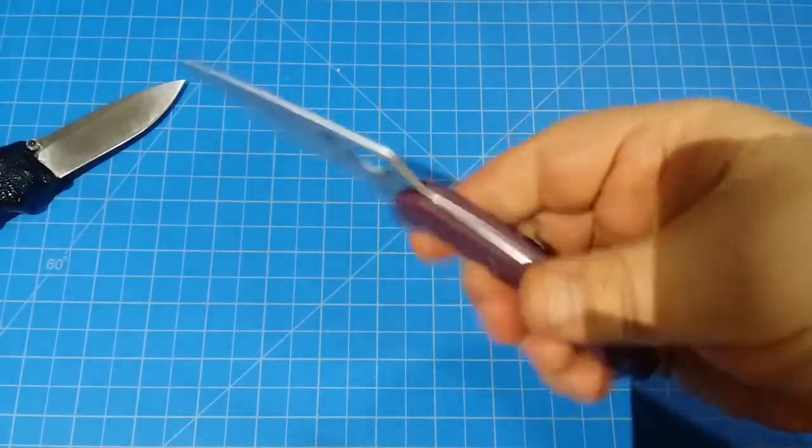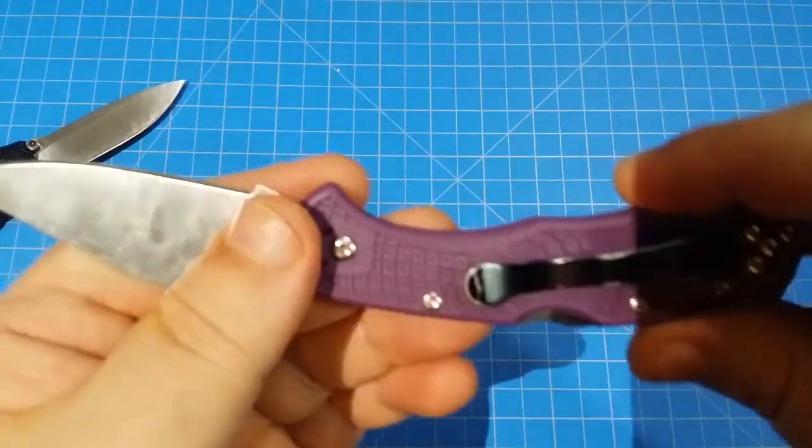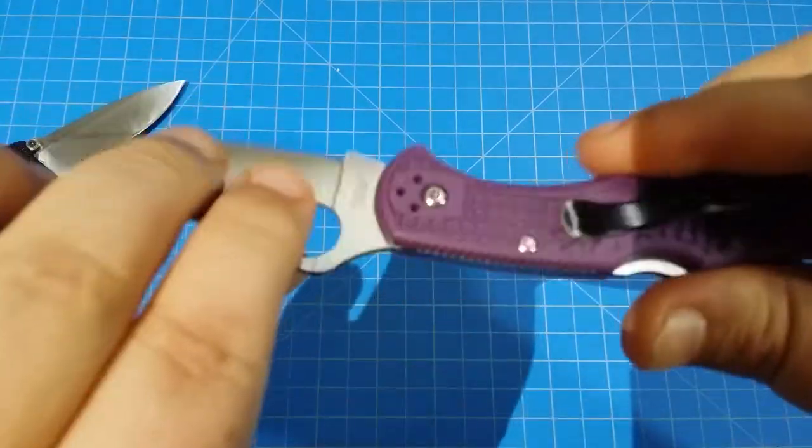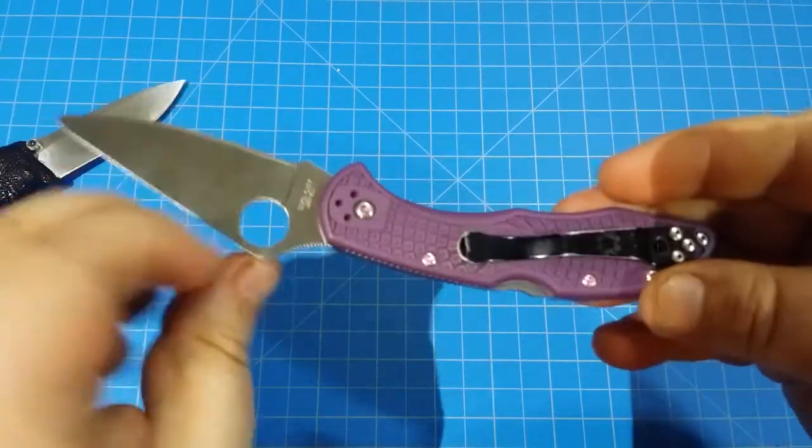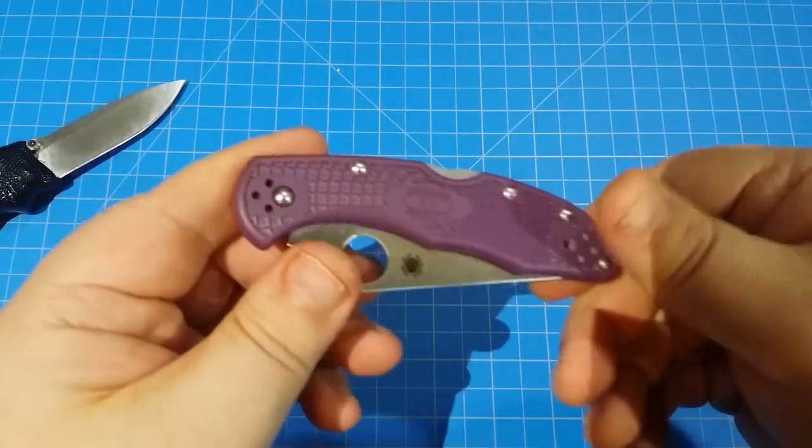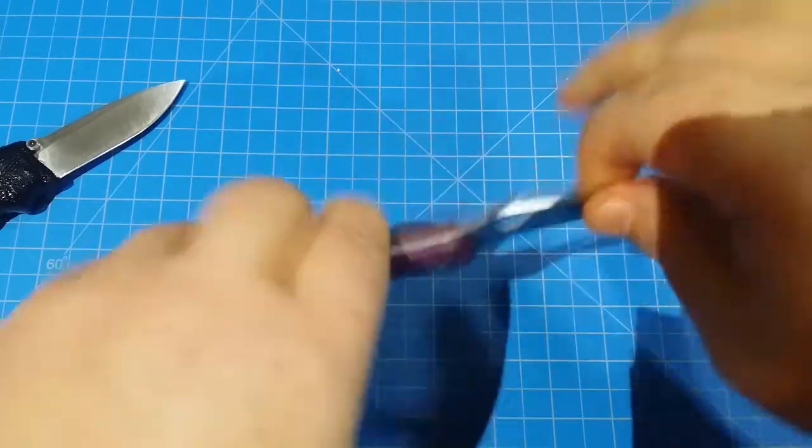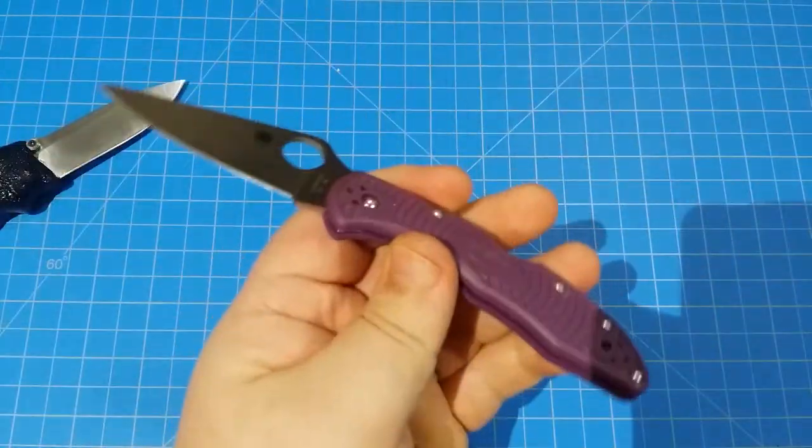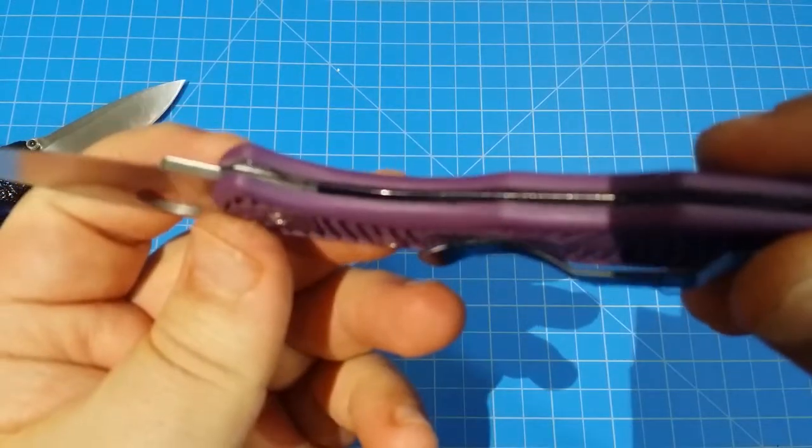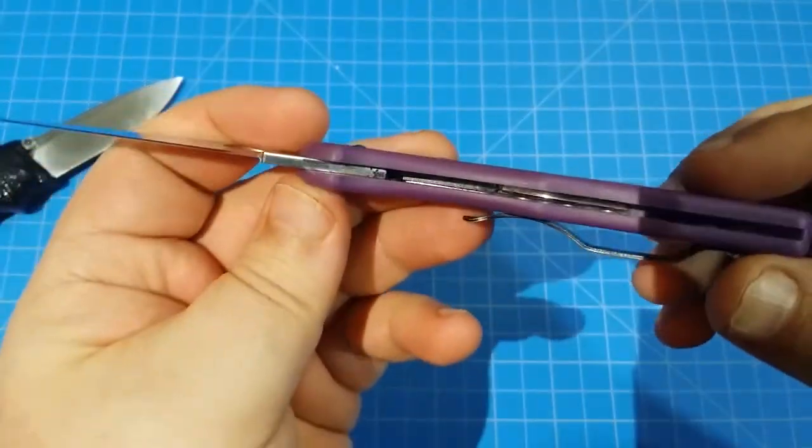So there you go, it's got the FR-N glass filled nylon scales. And the cool thing about this is you can carry it however you want - left, right, tip up, tip down, you're good to go. That's a great thing about this. It is closed construction. It does have some milled out steel liners in there for extra strength.